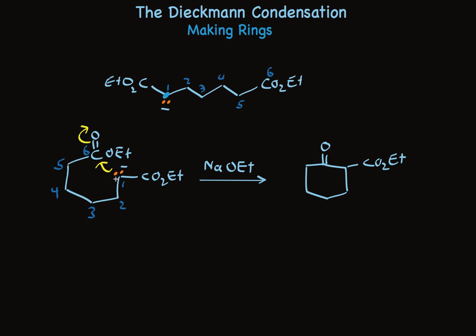We can track the carbons — make this one a blue dot — and here. The carbonyl that the nucleophile adds to is here, which is this one, which is this ketone carbon. So the Dieckmann condensation is really useful for making cyclopentanones and cyclohexanones.